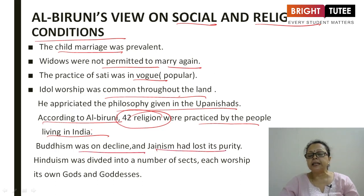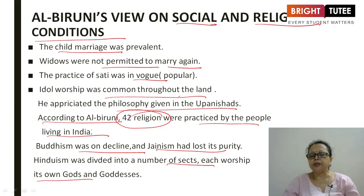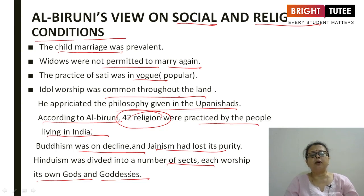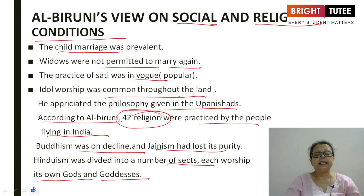According to Al-Biruni, 42 religions were practiced by the people living in India at the time of his visit. Buddhism was on decline and Jainism had lost its purity. Hinduism was divided into a number of sects — Vaishnavism, Shaivism — each worshipping its own gods and goddesses such as Lord Krishna, Lord Vishnu, Lord Brahma, Shiva, and Linga. These were all minutely observed by Al-Biruni in his book.